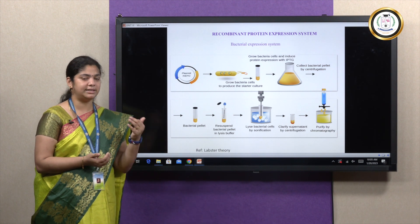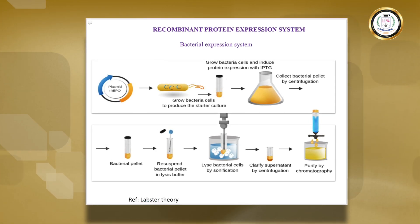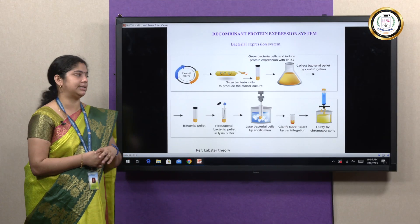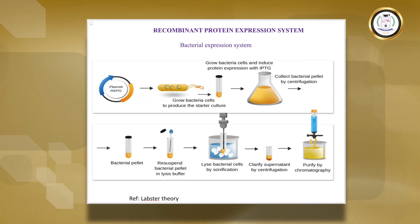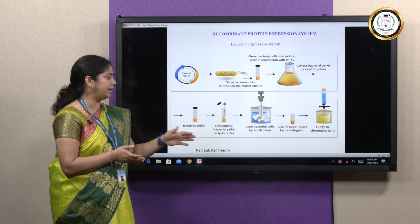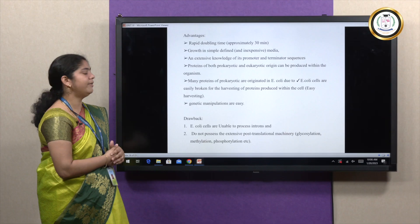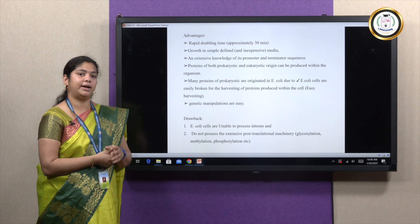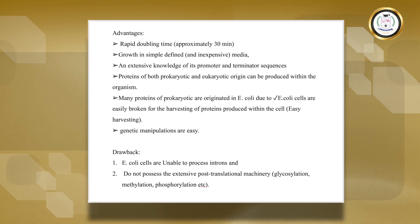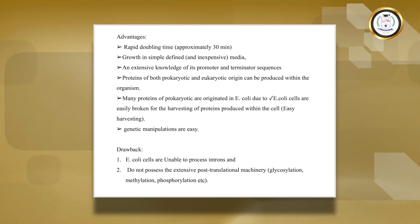The bacterial method is easier to propagate and multiply. To get a post-translationally modified protein, a specific growth factor, or an enzyme for basic research, mammalian cell cultures are used. In a bacterial expression system, the gene is inserted into a vector, the bacteria are grown in large-scale culture, and the recombinant protein is purified by chromatography after lysing the bacterial cells. Advantages include rapid doubling time and easy genetic manipulation, whereas the drawback is inability to process introns or perform extensive post-translational modification.